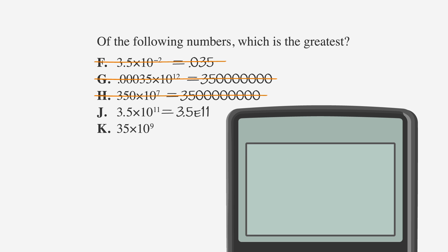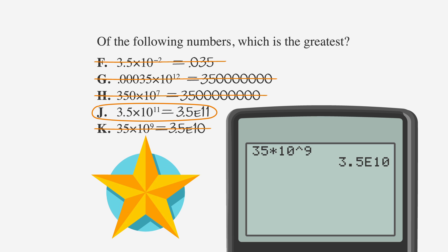Lastly, let's evaluate choice K, entering in 35 times 10 to the 9th using our calculator. We find it's 3.5e10. e10 means times 10 to the 10th, so choice K is 3.5 times 10 to the 10th. Answer choice J is the largest number because 3.5 times 10 to the 11th is bigger than 3.5 times 10 to the 10th. Let's give you and your trusty calculator a gold star for all that work.